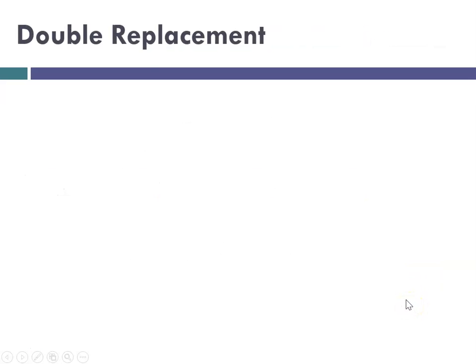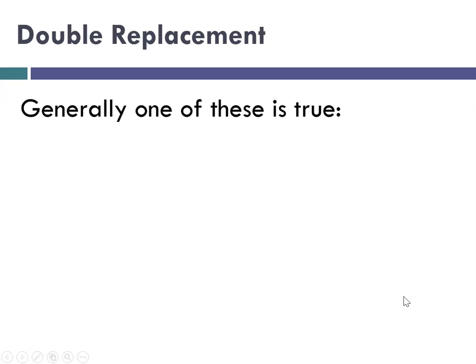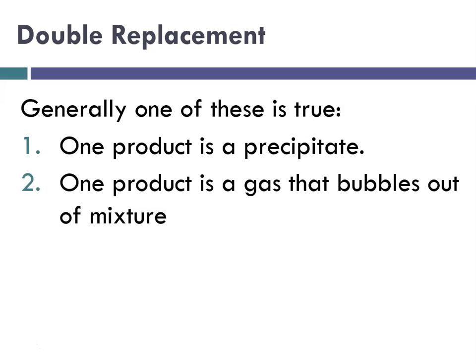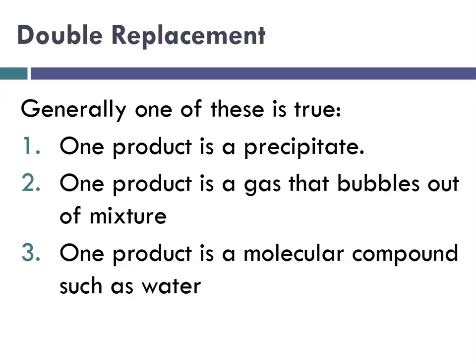With double replacement, the reactions all involve aqueous solutions — things dissolved in water. For a double replacement to take place, generally one of these things must happen: one product is a precipitate (insoluble, falling to the bottom of the beaker); a product is a gas that bubbles out; or a product is a molecular compound such as water, which won't dissociate into free ions in solution. Something has to leave the party.